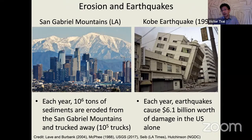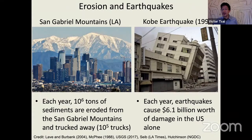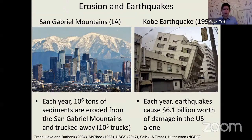In the United States, approximately $6.1 billion worth of damage is done by earthquakes every year. There are damages to buildings like this example from Kobe, Japan, with similar types of damage happening in the United States. At a very large scale, these earth processes are quite important societally to people living in various regions of the world.